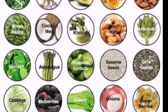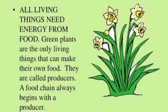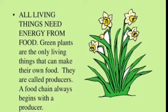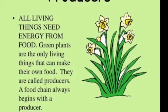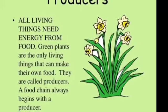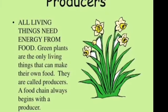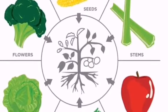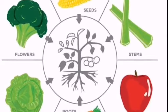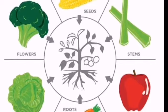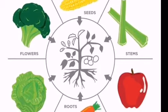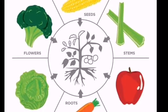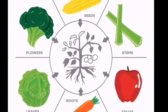We know that green plants are also known as producers or autotrophs, as they make their own food with the help of photosynthesis. All other organisms, other than green plants, are known as heterotrophs. Now let us discuss parts of the plants which we eat as food.